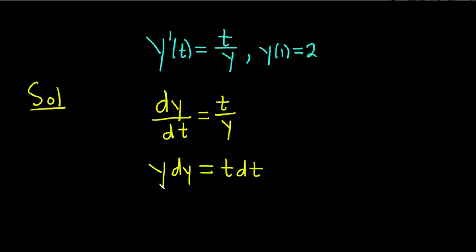And now we have all of the y's together on one side with the dy and all of the t's together on one side with the dt. So now we can integrate both sides. So we integrate and integrate. And these are super easy integrals. There's a one here on each of the exponents. So you just use the power rule.